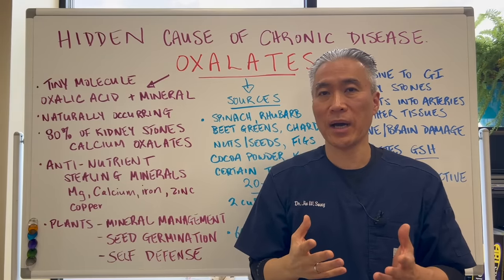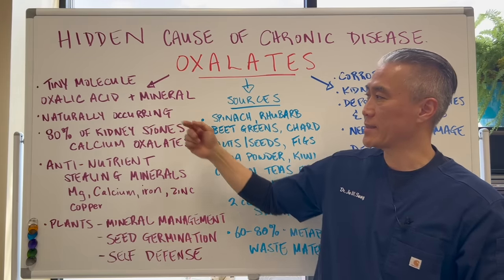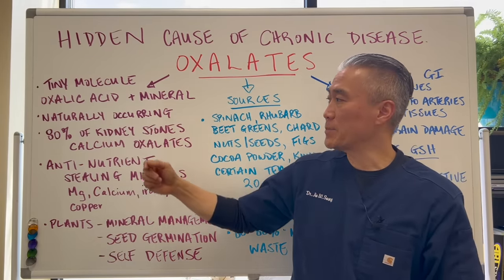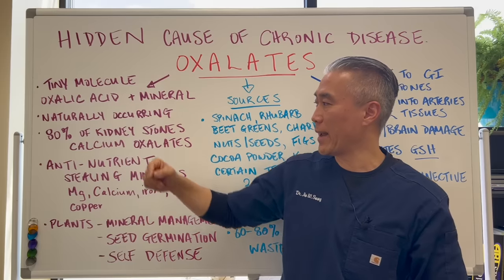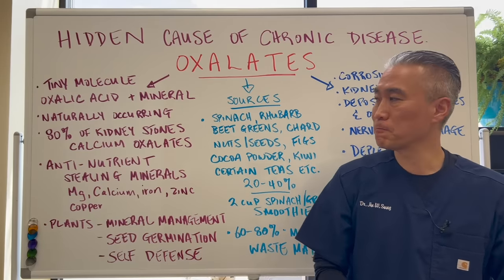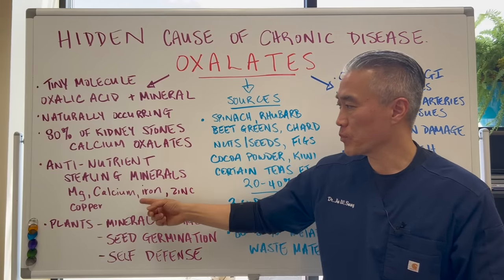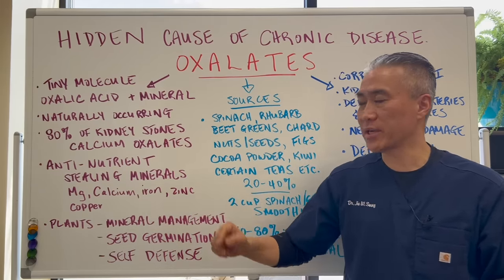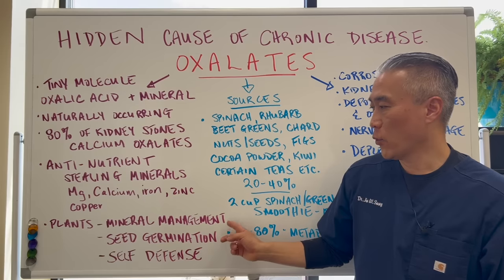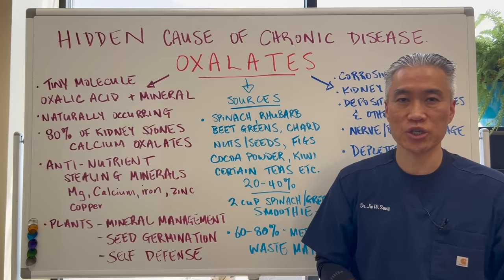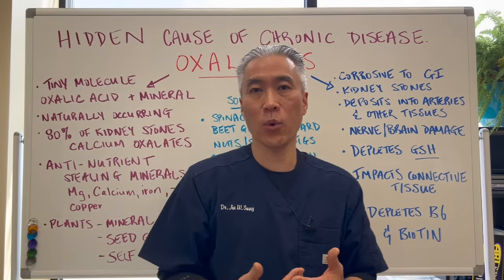Oxalate is basically a tiny molecule made up of an oxalic acid plus a mineral. It's naturally occurring. And 80% of what we call kidney stones is calcium oxalates — it's an oxalic acid plus a calcium. It's an anti-nutrient. It steals minerals from our body: magnesium, calcium, iron, zinc, and copper. Plants use oxalates for mineral management, seed germination, and self-defense. It's just a protective mechanism for the plants.